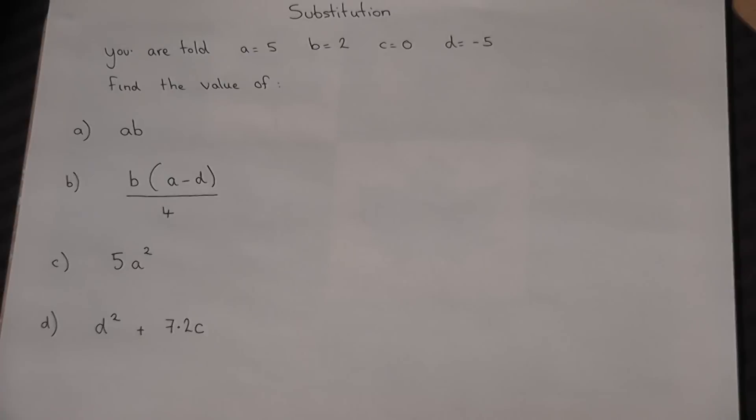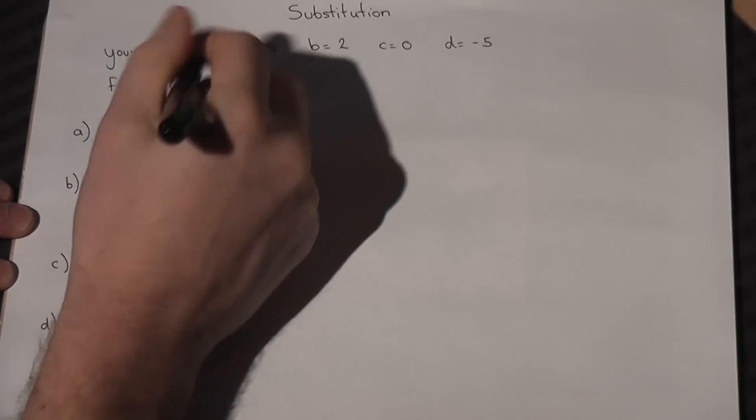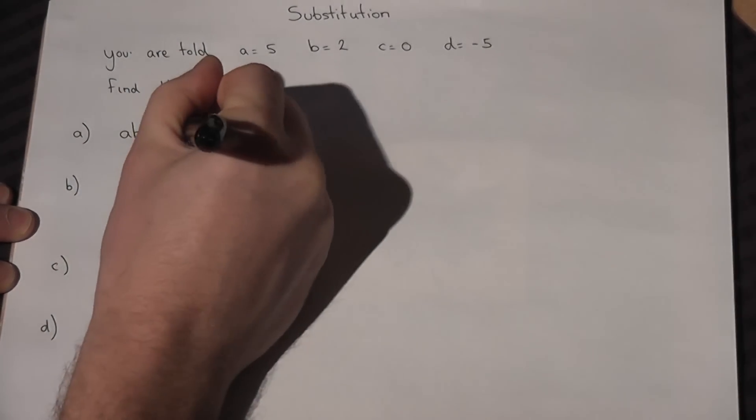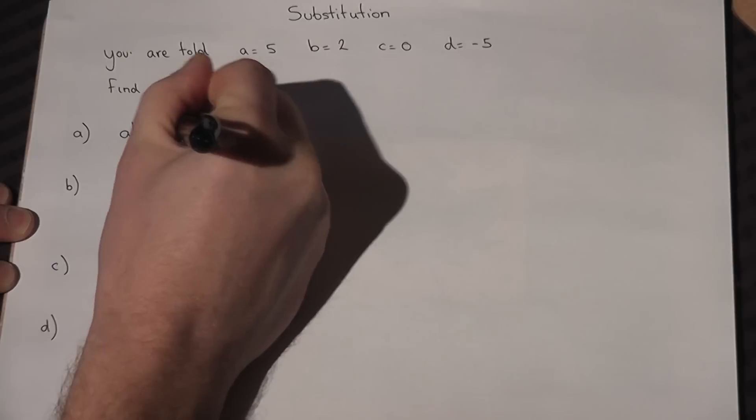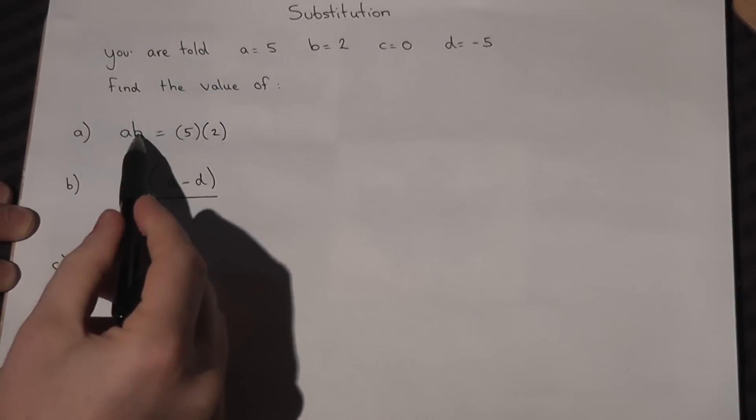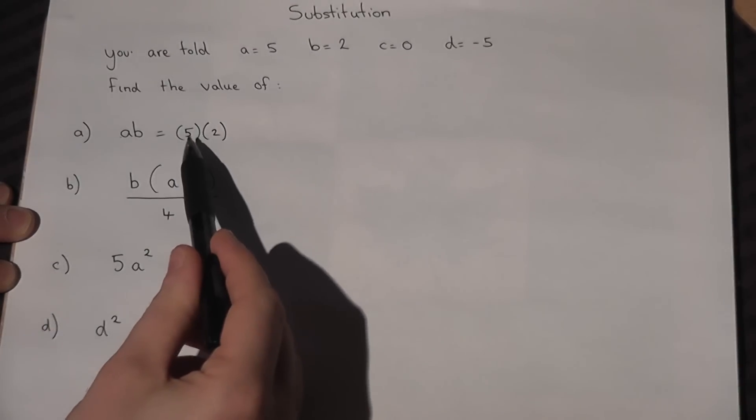For example, ab equals—well, a is 5, b is 2—so 5 times 2. When they're adjacent to each other, it means times, so 5 times 2 equals 10.